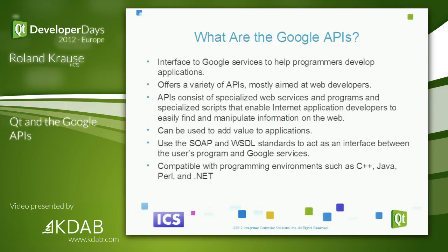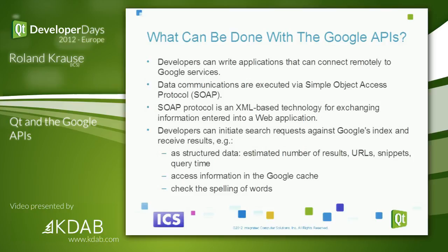The Google API consists largely of specialized web services and programs that allow internet application developers to find and manipulate information on the web. It's close to Google's core mission as a search engine, though Google is also dominantly an advertisement broker. We use SOAP and WSDL standards to act as an interface between user programs and Google services. What we've developed is compatible with other environments such as pure C++, Java, Perl, and .NET.